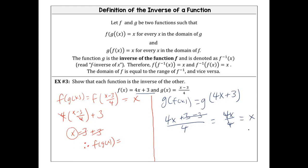4 divided by 4 is 1, so we're left with x. This is asking you to verify — to show that they're inverses. Did f∘g equal x? Yes. Did g∘f equal x? Yes. So therefore we can say that f of g of x equals g of f of x, which equals x. So f of x and g of x are inverses.